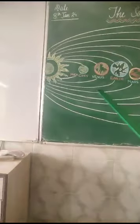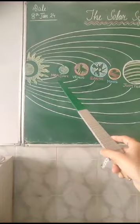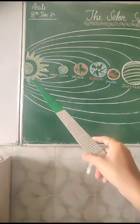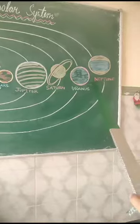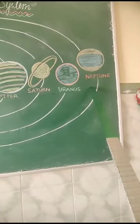Just remember that Mercury is the planet which is closest to the sun and Neptune is the planet which is farthest from the sun.